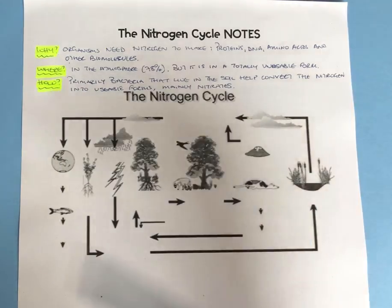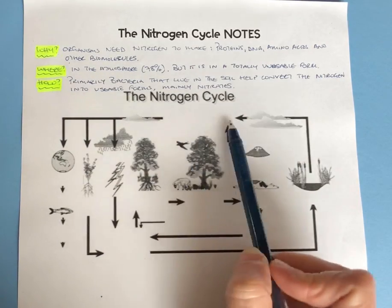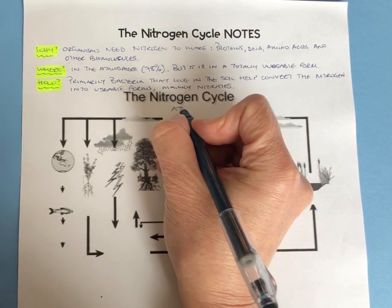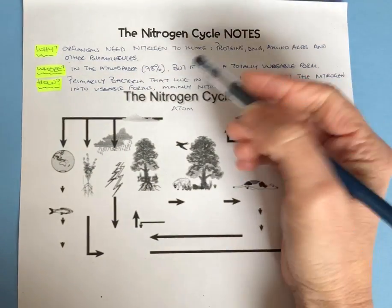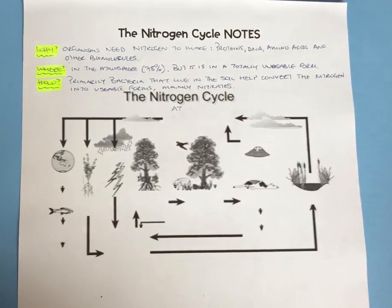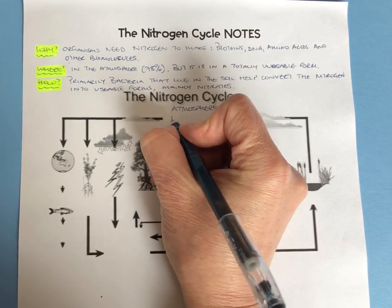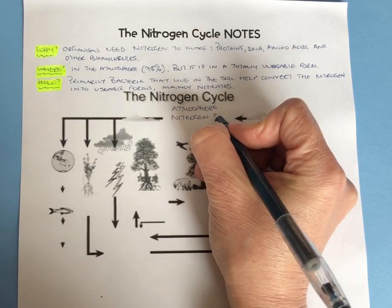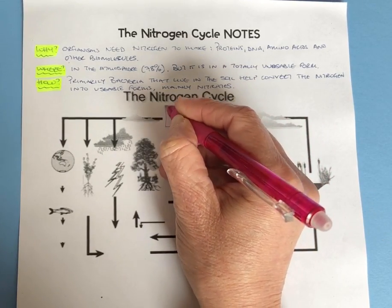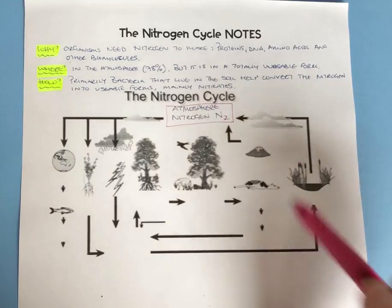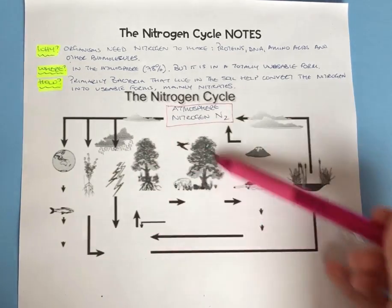Now we're going to move on to this diagrammatic representation of the nitrogen cycle. We're going to start at the very top and talk about the atmosphere — this is where there is a huge source of nitrogen. The atmospheric nitrogen is in the form of N2. That's our big pool or source of nitrogen. Let's see how this atmospheric nitrogen gets into the ecosystem — into the plants, into the soil, into the sea.